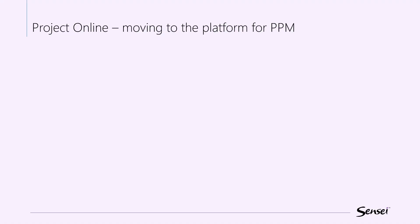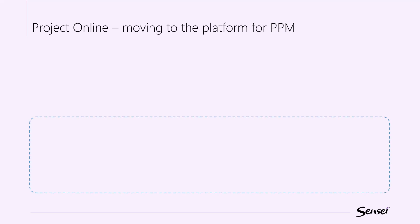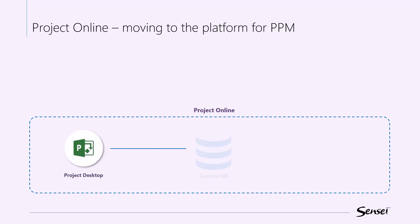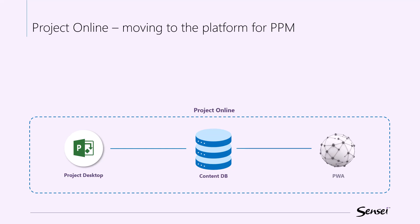You can think of Project Online as an umbrella term covering three pieces. Project Desktop is focused on the detailed scope of the project — the schedule with tasks and assignments primarily. The content database is where the schedule is saved when using Project Online.